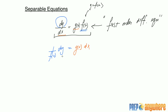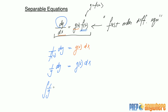At this point we want to integrate both sides. I'm going to replace f(x) with y, and integrate 1 over y dy on the left and g(x) dx on the right. These are the essential basic steps to get the antiderivative of a first-order differential equation.